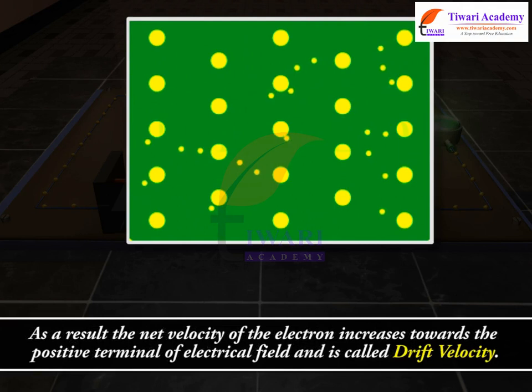As a result, the net velocity of the electron increases towards the positive terminal of electric field and is called drift velocity.